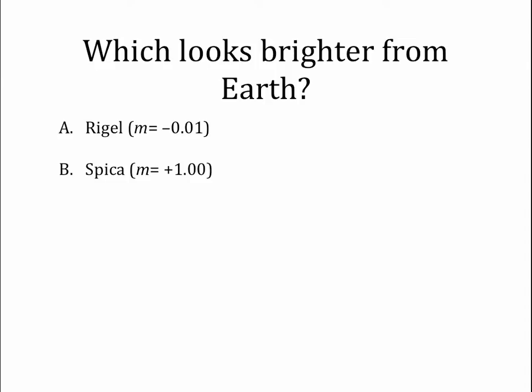Now it's your turn. Tell me which of these two stars would look brighter from the Earth. The answer is A, Rigel, because it has a negative magnitude, while Spica has a positive magnitude — so Rigel is brighter.